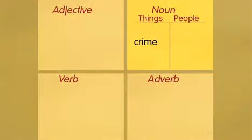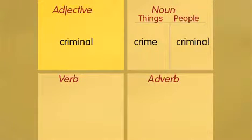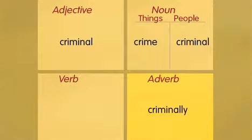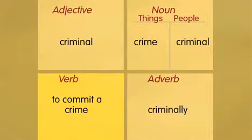Let's have a look at the crime word group. Crime is a noun — it's a thing. A criminal is a person who commits a crime. Criminal is also the adjective; we can describe something by using the word criminal before the noun: 'That was a criminal act.' And we have the adverb criminally — to behave criminally is to behave in an illegal way. There's no verb from crime; we have to use the phrase 'to commit a crime.'